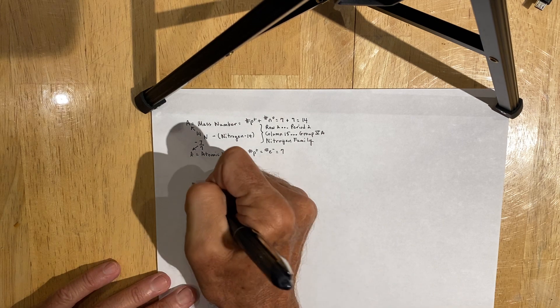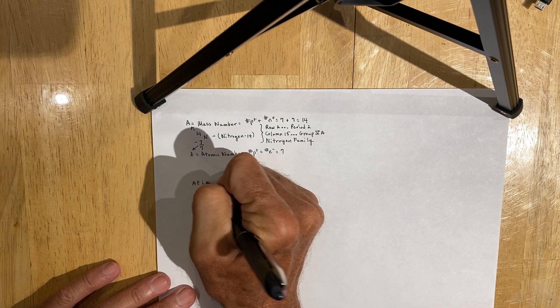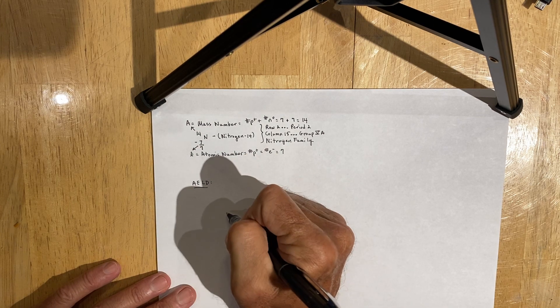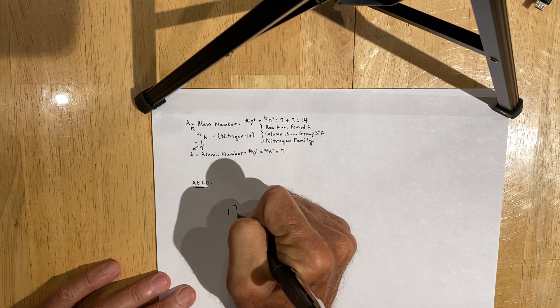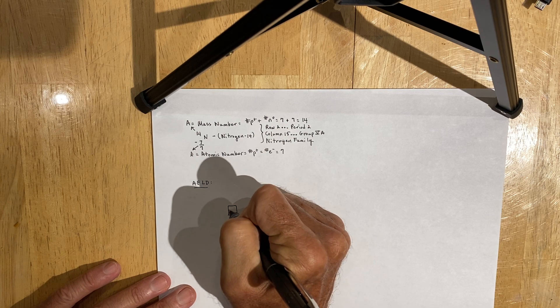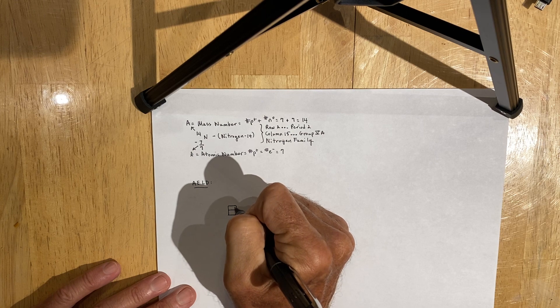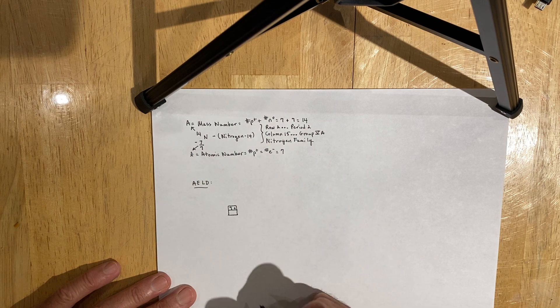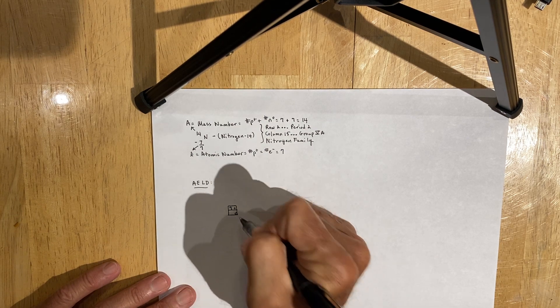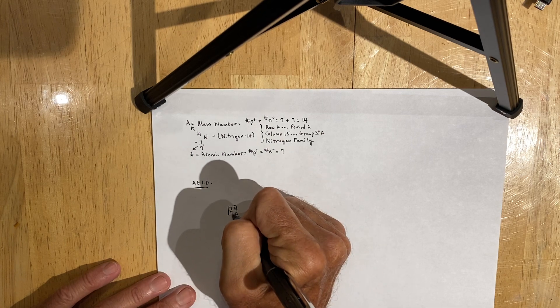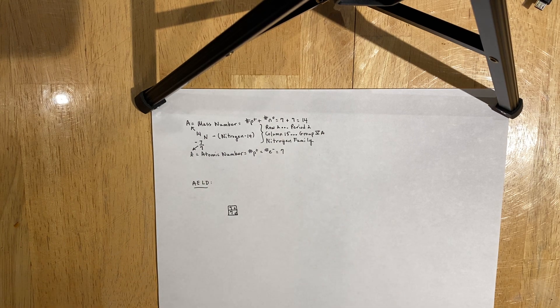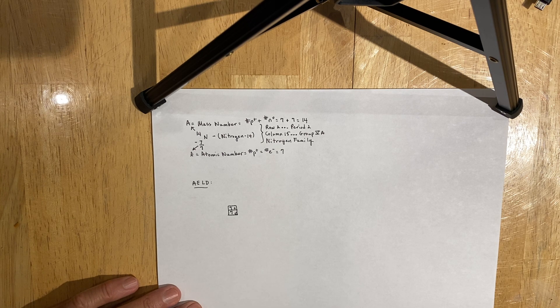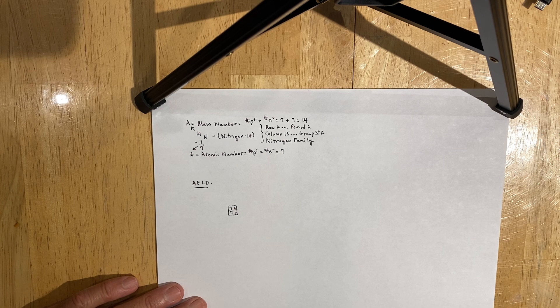That being said, for each element on the Meet the Elements Lab, I want you to diagram out the AELD. You do so by constructing a box to represent the nucleus, divide it in two, and the top part of the box represents the number of protons, or positive charges, and the bottom box represents the number of neutrons, or neutral charges, which in this case is 7. So you can clearly see why the mass number of nitrogen 14 is 14, because it has seven protons and seven neutrons.